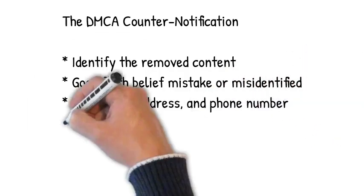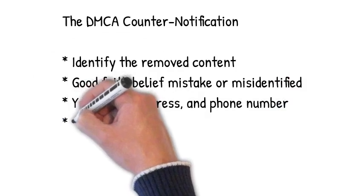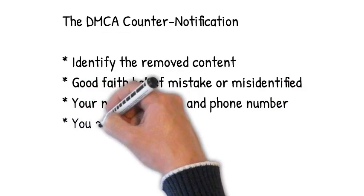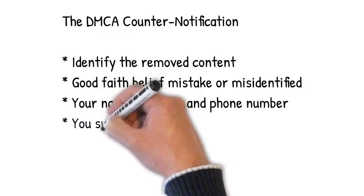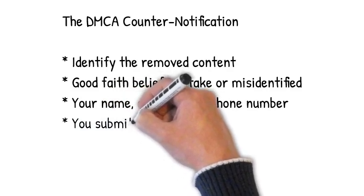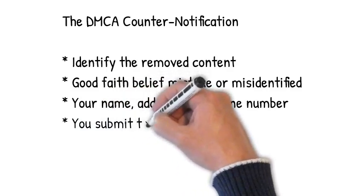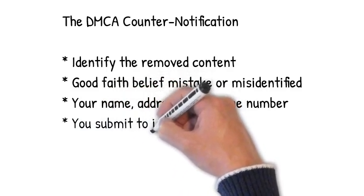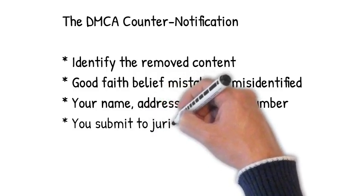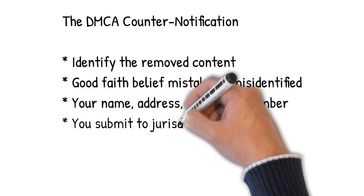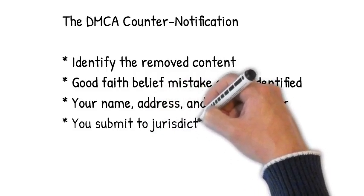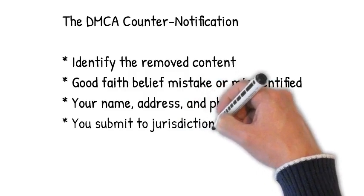So basically you're saying you have a right to use this image for whatever reason it may be. Then you have to provide your name, address, and phone number. This is very important because a lot of people ask whether there's any way to participate in the DMCA process without identifying yourself — and the answer is no, particularly in the counter notification step. It's a fundamental part; if you don't include that information, your counter notification isn't going to be valid.